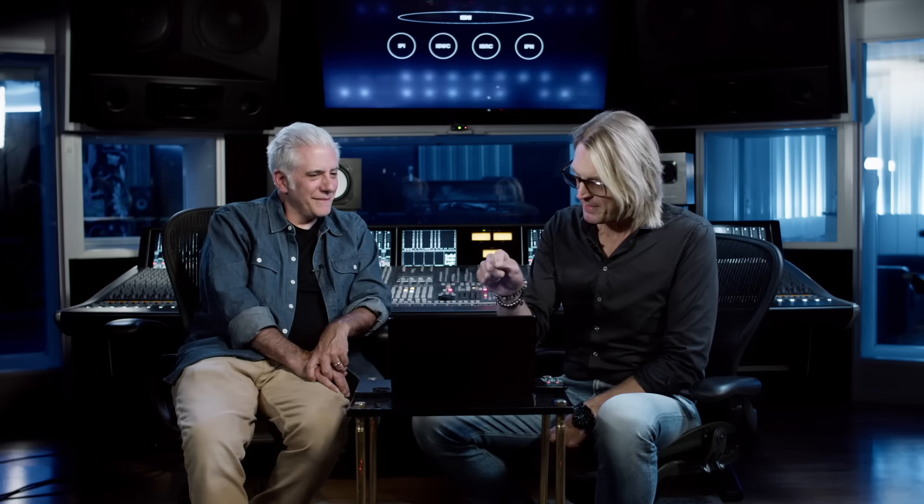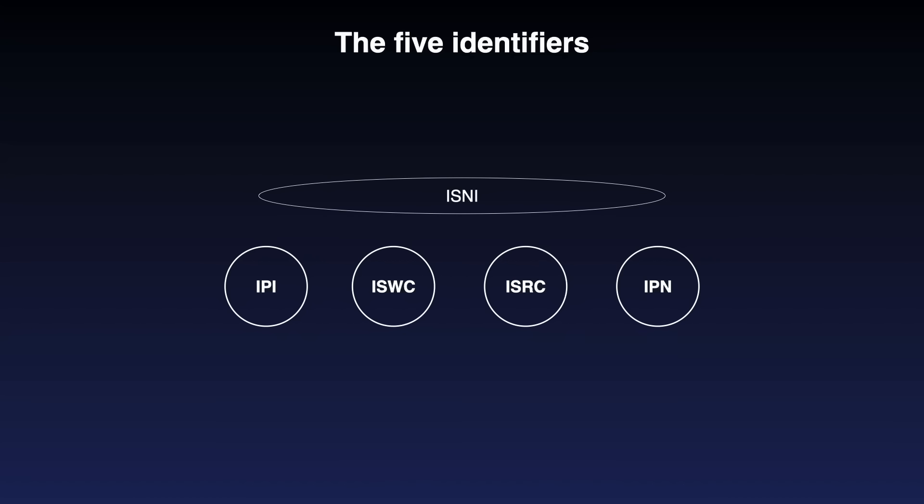Starting with IPI — Interested Parties Information — it's kind of a social security number for all songwriters. If you don't have one, you will never get paid for songwriting, with one exception: if you sell the music as so-called buyouts, then you don't need to be involved. But if you want to be in the system, you need an IPI. All publishers also need an IPI. When IPI holders — songwriters — create a musical work, they get an ISWC, International Standard Work Code, which is the unique number for just that musical work.